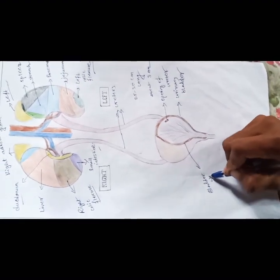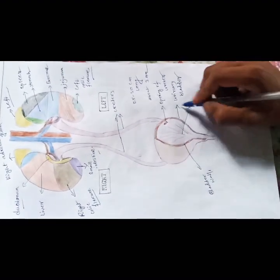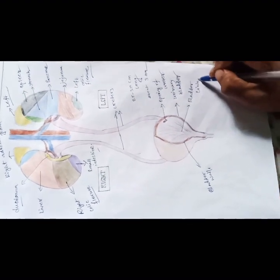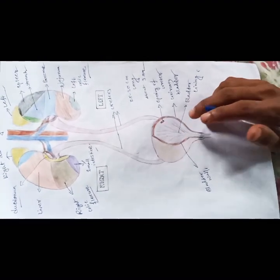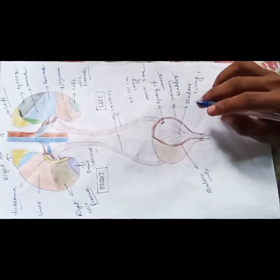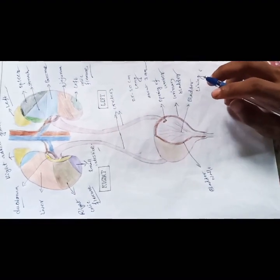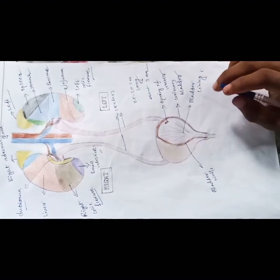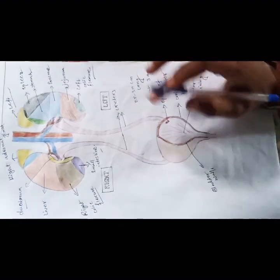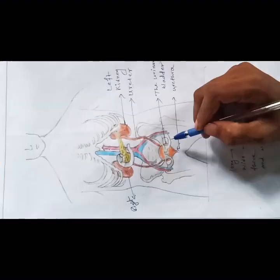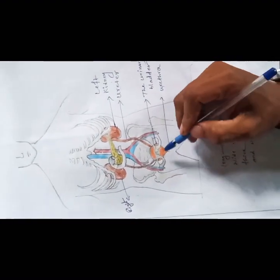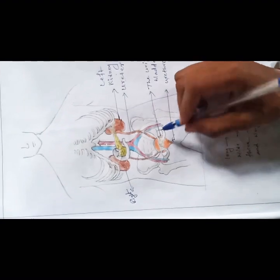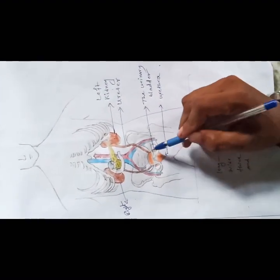You can also see the bladder lining. The urinary bladder is a reservoir for urine. It lies in the pelvic cavity and its size and position vary depending on the volume of urine it contains. When distended, the bladder rises into the abdominal cavity. You can see the urinary bladder position here — this is the hip bone, and the bladder lies in the pelvic cavity.